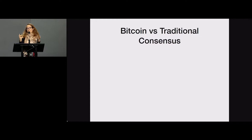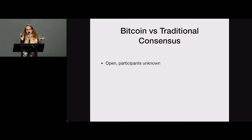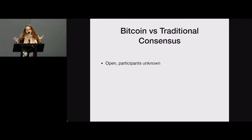Before I start, I'm going to quickly do a small recap about the difference between Bitcoin and traditional consensus protocols. In Bitcoin, the set of participants is completely open — people can leave or join the protocol whenever they want with no barrier. This means the set of participants is unknown, which is very different from traditional consensus protocols, where participants must be known prior to the protocol.